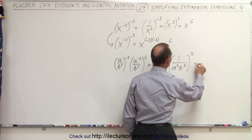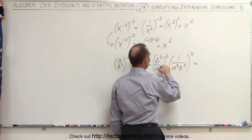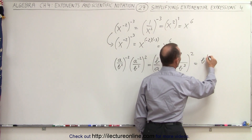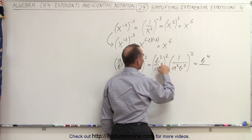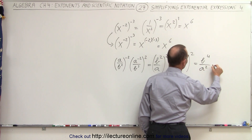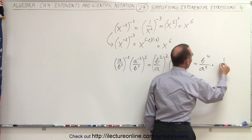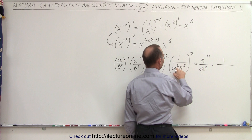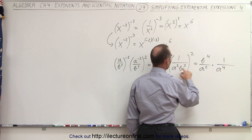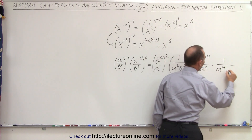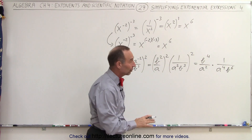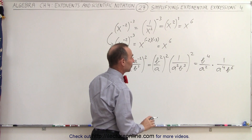Now we apply the exponents. Here we have b to the second power raised to the second power, which is b to the fourth power, divided by a to the second power. Multiplied by 1 over: here we have a to the second power raised to the second power, which is a to the fourth power, and b cubed raised to the second power, which is b to the sixth power. Now all we have to do is simplify what we have.